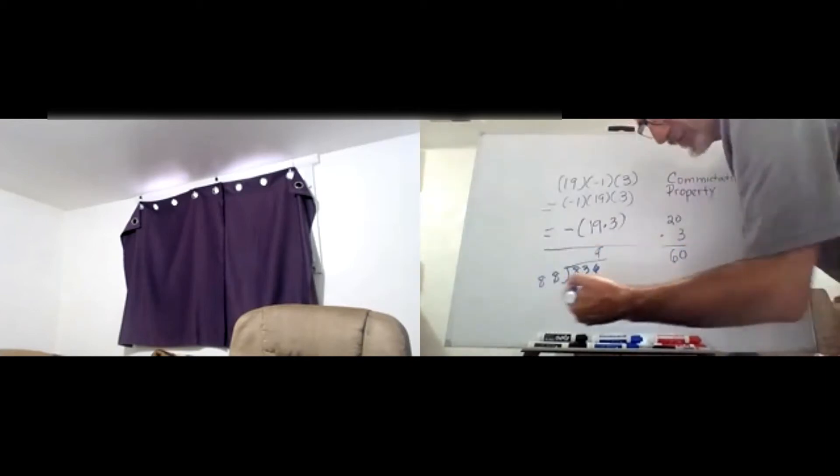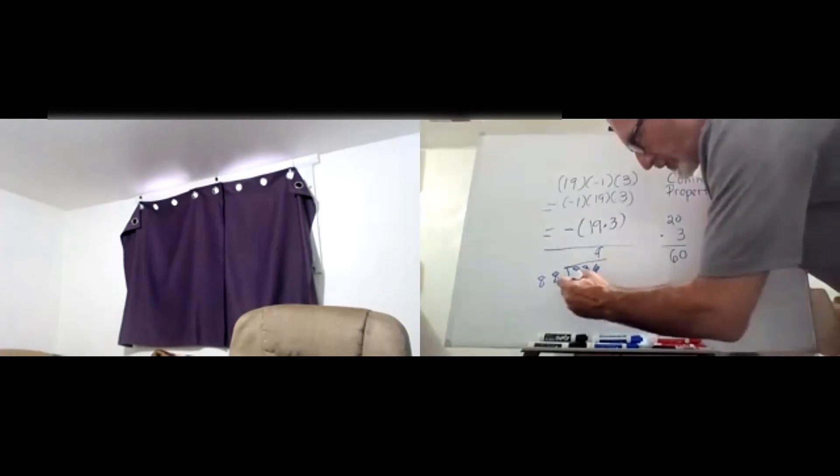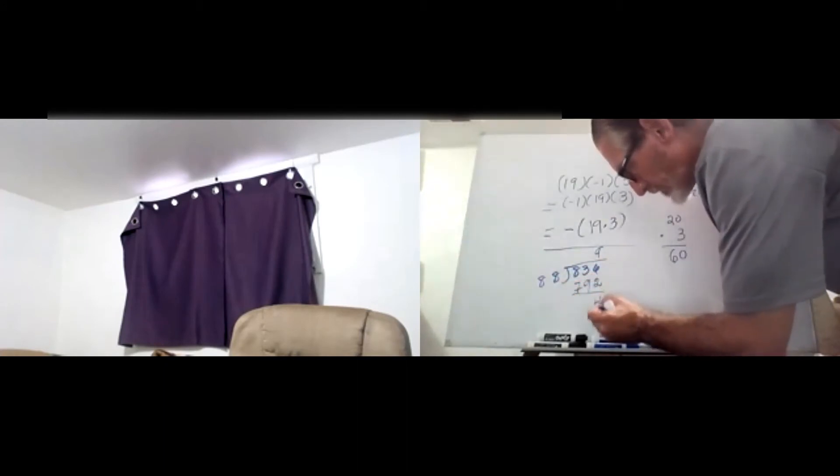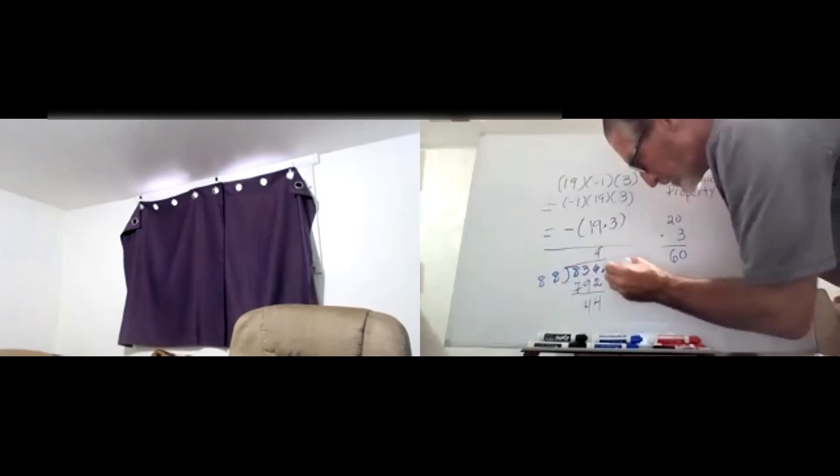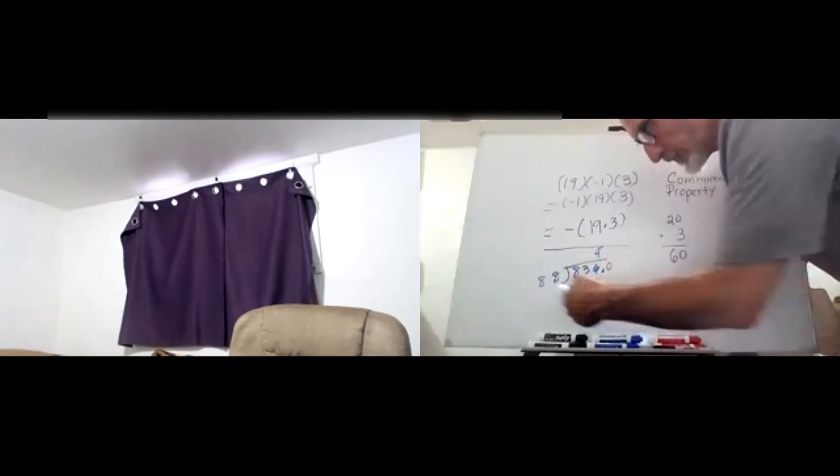Then I can check on the decimal point. Bring down a 0, and 88 won't go into 4, but 8 goes into 40 five times. Maybe 88 will go into 440 - sorry, 440 - five times as well.